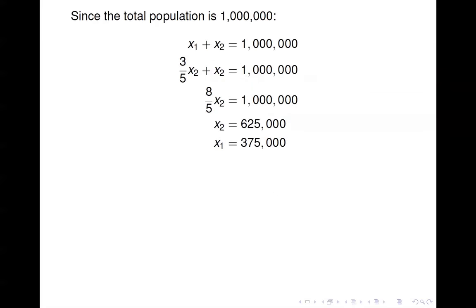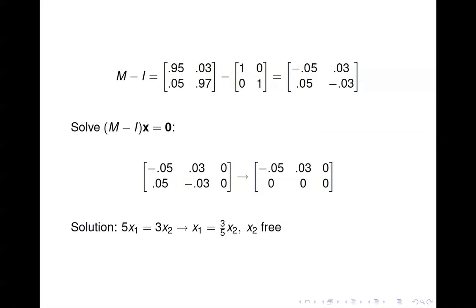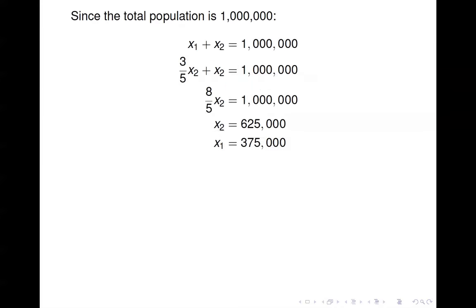To get the actual probability vector corresponding to this relationship, we want x₁ plus x₂ to equal one million. Since x₁ is three-fifths x₂, we get eight-fifths x₂ equals one million, which gives x₂ equals 625,000 and therefore x₁ equals 375,000.